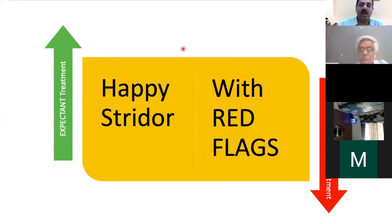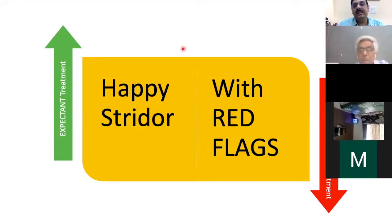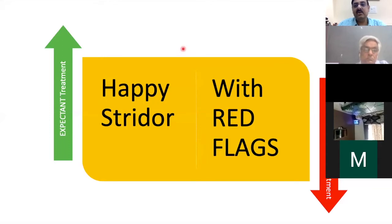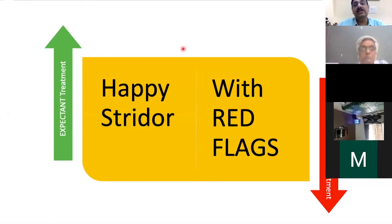The other group is children who have red flag signs. Children with happy strider will form the major chunk of your practice, but you will definitely have patients with red flag signs — this is the group that requires investigations. The happy strider group can be managed expectantly because they most probably have laryngomalacia.